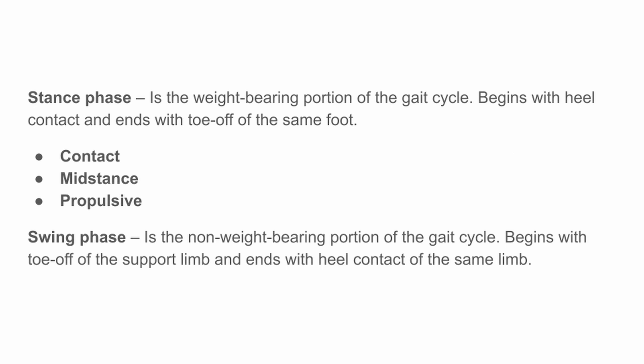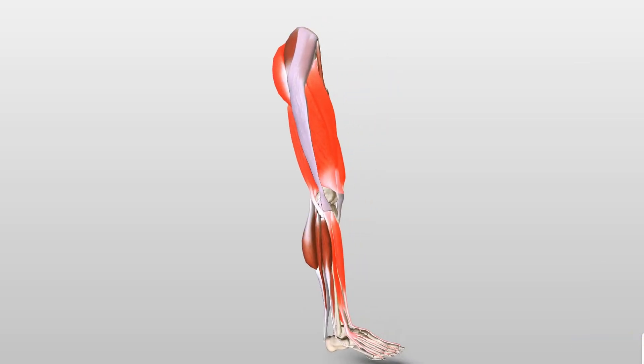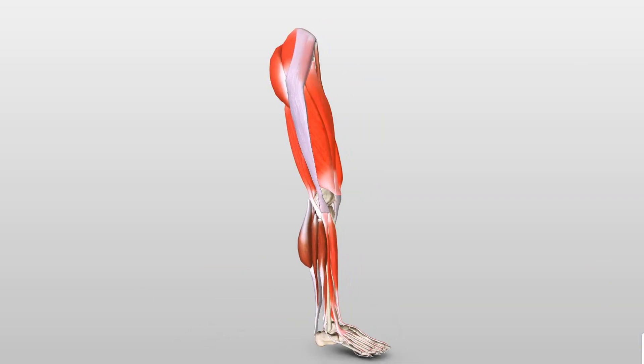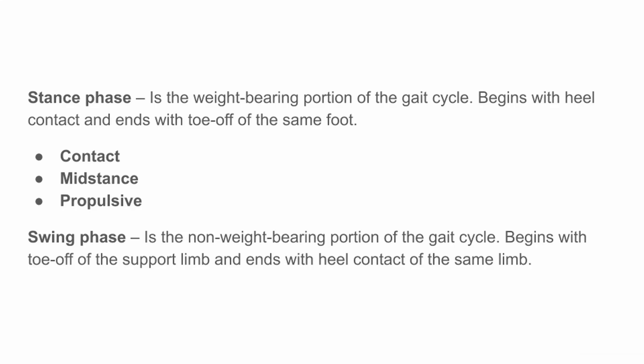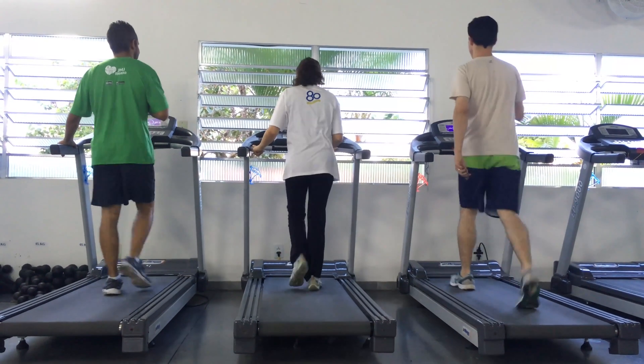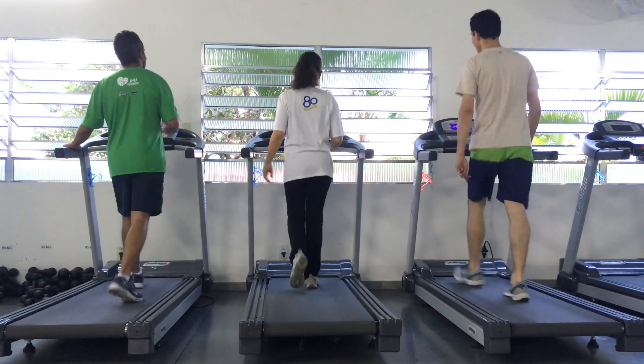Our gait cycle can be broken down into two phases: the stance phase and the swing phase. The stance phase is the weight-bearing portion of the gait cycle. It begins with heel contact and ends with toe-off of the same foot. Swing phase is the non-weight-bearing portion of the gait cycle. It begins with toe-off of the support limb and ends with heel contact of the same limb.